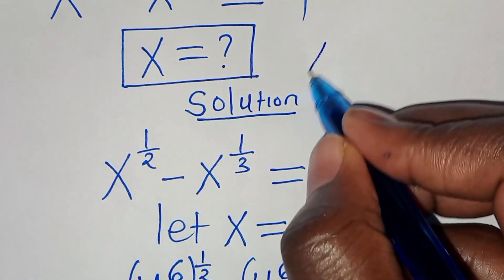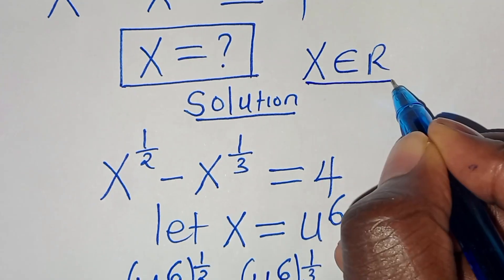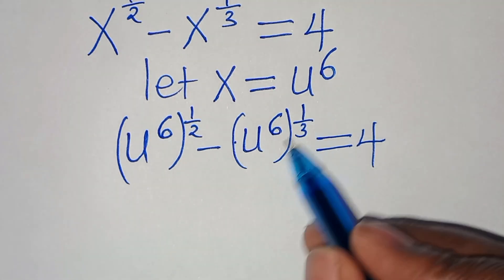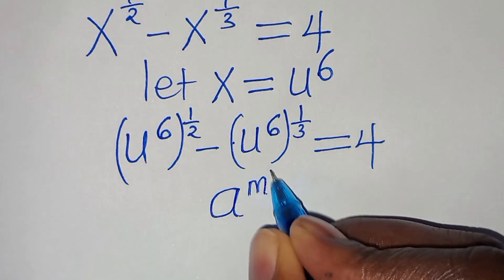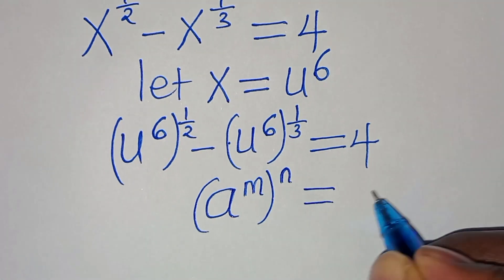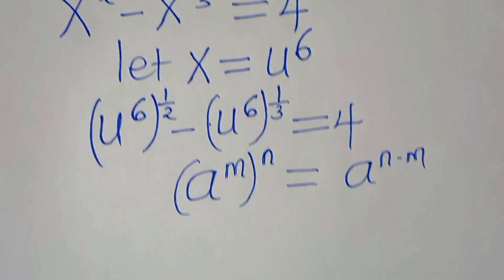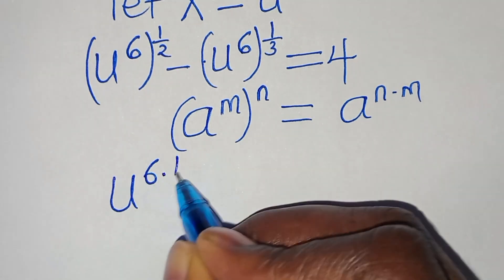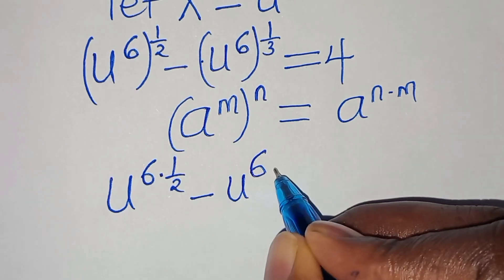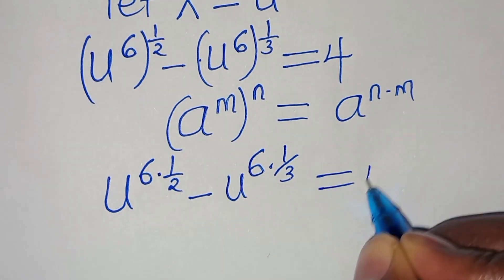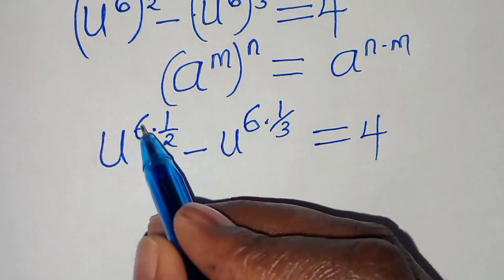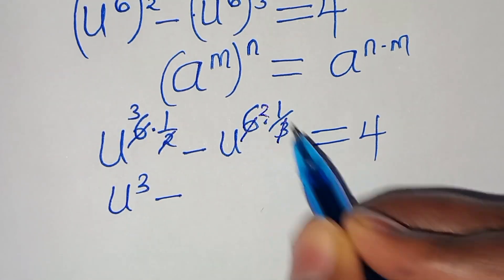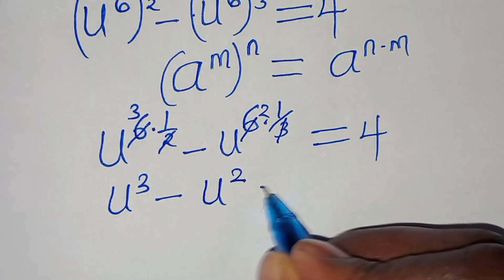We have to note that x here is a member of real numbers. So we have u to the power of 6 raised to the power of a half, and u to the power of 6 to the power of a third. This is in the form of a to the power of m raised to the power of n, which we can express as a to the power of n times m. Applying this exponent property, we have u to the power of 6 multiplied by a half, minus u to the power of 6 multiplied by 1 over 3, equal to 4. Simplifying: 6 divided by 2 is 3, so we have u to the power of 3, minus — 6 divided by 3 is 2 — u to the power of 2, this is equal to 4.